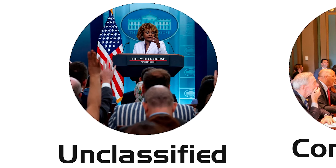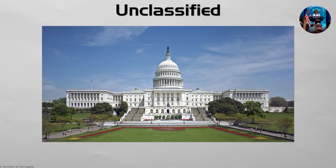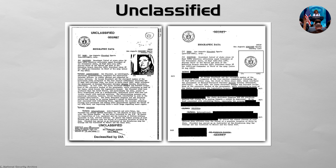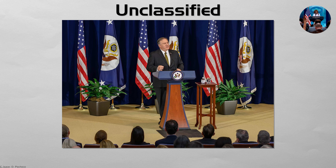Unclassified Information is the foundation of all government information. It is the default, standard status for any data that is not sensitive and can be freely shared with the public without causing any harm. The principle behind it is one of government transparency and public trust.